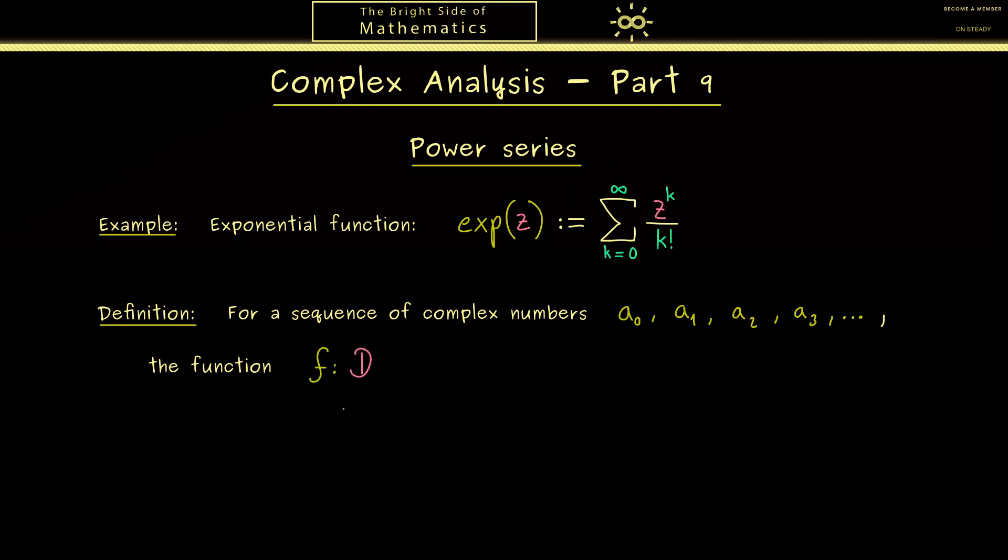Okay then for these numbers we can define a complex function we can call f. Moreover the domain we call D so we have a function from D into C. Then this map is defined by sending z to the infinite series of the coefficient a_k times z to the power k.